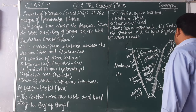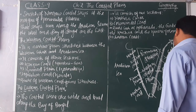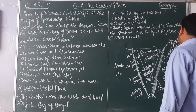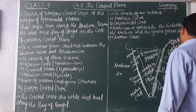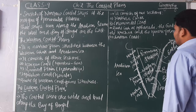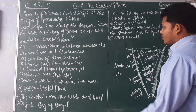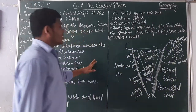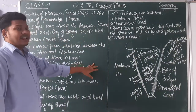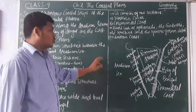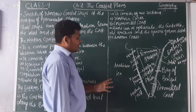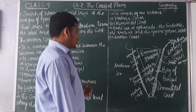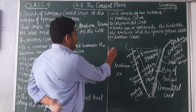Rivers flowing into the Bay of Bengal form deltas at their mouths. That is a brief overview of the coastal plains. In the next section we will discuss the group of islands.